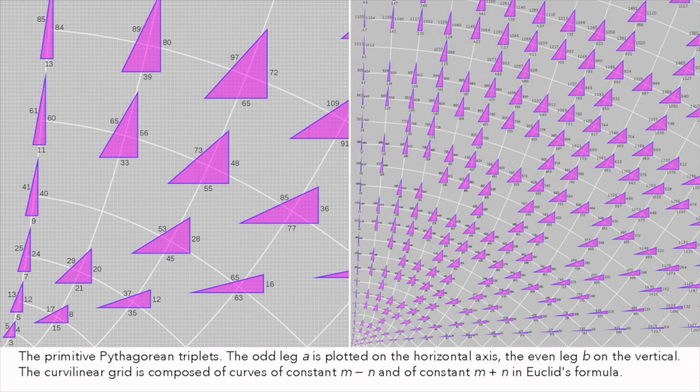These are also called primitive triplets because they have no common divisors. If the members of a primitive triplet are multiplied by the same integer, the result is a new, but not primitive triplet.